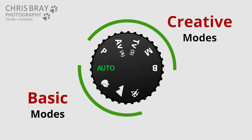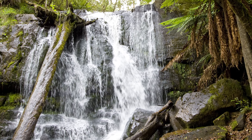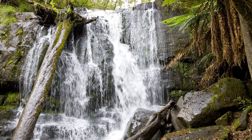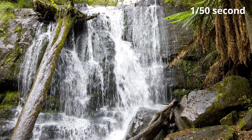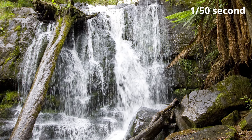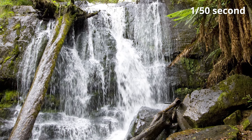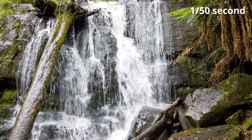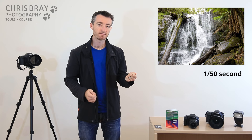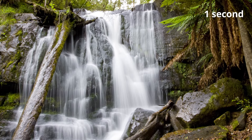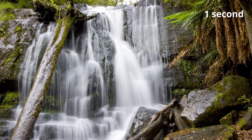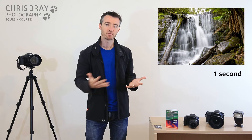Here's a photo of a waterfall taken in auto mode - the camera chose 1/50th of a second, which is neither particularly quick nor slow, so we haven't frozen the waterfall or shown that nice flowing movement. But if instead we shoot a one-second photo, you can see that lovely flowing cascade effect that looks so beautiful in waterfalls.